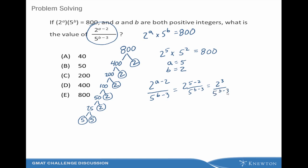We can put 2 to the 3rd power in our numerator — numerator's just a nerdy word for top — and our denominator is 5 to the B minus 3. And since B equals 2, it's 5 to the negative 1 in the denominator.